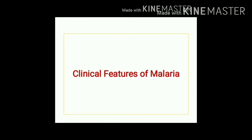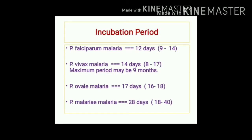Regarding clinical features, the average incubation period for falciparum malaria is 12 days, ranging from 9 to 14 days. For vivax malaria it is 14 days, ranging 8 to 17 days, with a maximum of up to 9 months in some cases. Ovale malaria averages 17 days (range 16–18 days) and malariae malaria averages 28 days (range 18–40 days).